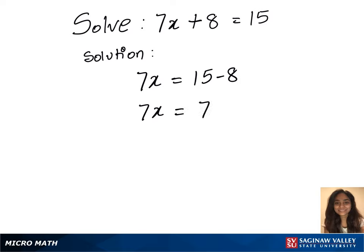Since we have 7 at 7x, divide 7 on both sides. x equals 7 over 7. 7 and 7 gets cancelled, which gives us x equals 1. And that's our final answer.